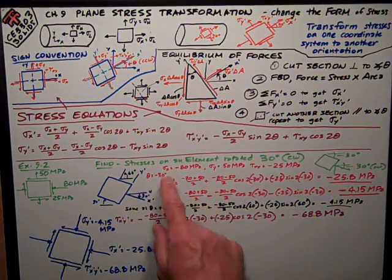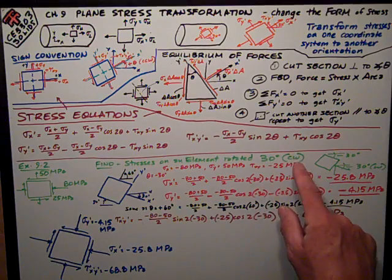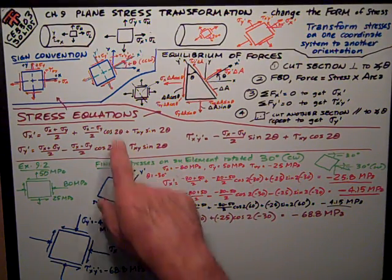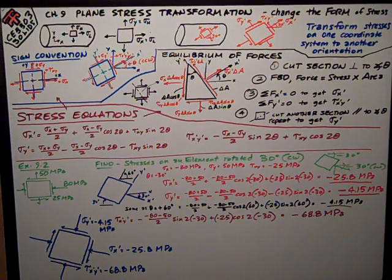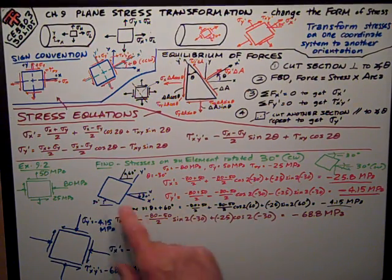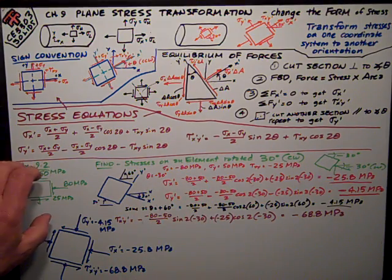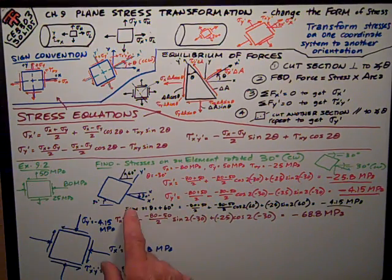And my angle of rotation is 30 degrees clockwise, so that makes it a negative angle of rotation by my sign convention up here. So now it really just, here I've drawn the element rotated 30 degrees. I've taken this element and rotated it 30 degrees clockwise.